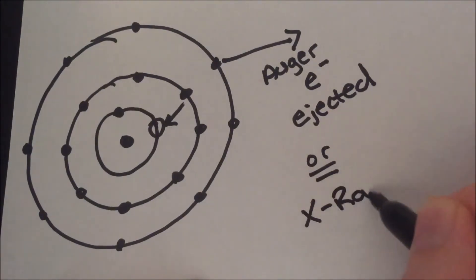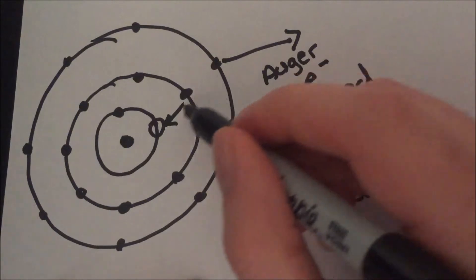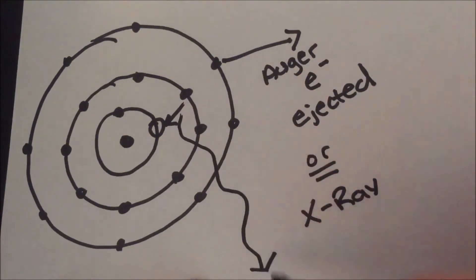Alternatively, this difference in energy can be lost through the emission of an X-ray, which is a competing process to Auger electron generation.